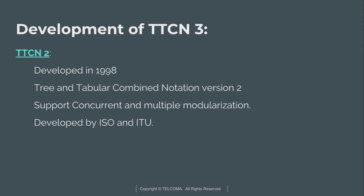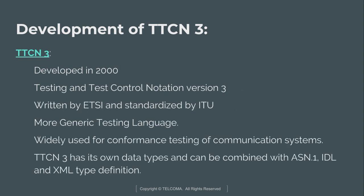Coming to the next version, TTCN-2 was developed in 1998, also known as Tree and Tabular Combined Notation Version 2. It supports concurrent and multiple modularization, and was developed jointly by ISO and ITU — two combined committees that developed the TTCN-2 language.